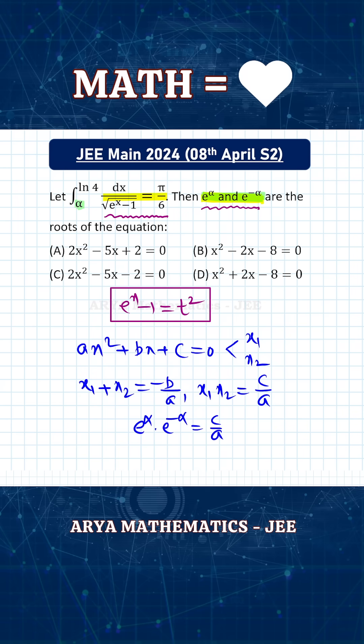Now product of these two will be 1, so that means c/a must be 1, which will imply that c and a, these two must be equal. So therefore, for the required quadratic equation, the coefficient of x² and the constant term must be equal.